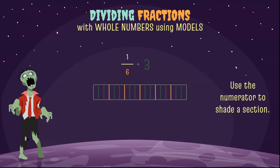And now we're going to use the numerator to shade a section. And the numerator is just one, so we're just going to shade one section. So now we look at the bar as a whole and we say, okay, how much of our bar is shaded?